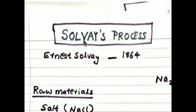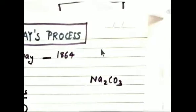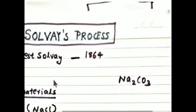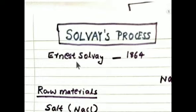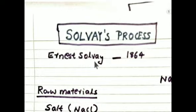Hi everyone. New topic: Solvay's process. It is the process of manufacturing sodium carbonate, also known as soda ash. This process was devised by a Belgian chemist named Ernest Gaston Joseph Solvay in 1864.